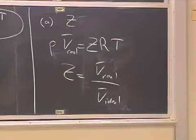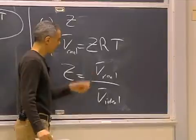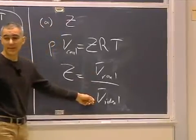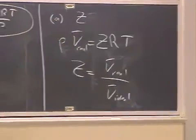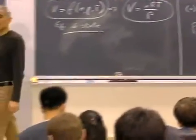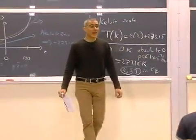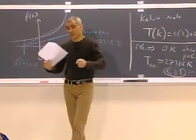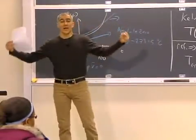So if Z is less than 1, then the real gas is more compact than the ideal gas. It's a smaller volume. If Z is greater than 1, the real gas means that the atoms and molecules in the real gas are repelling each other and wants to have a bigger volume.